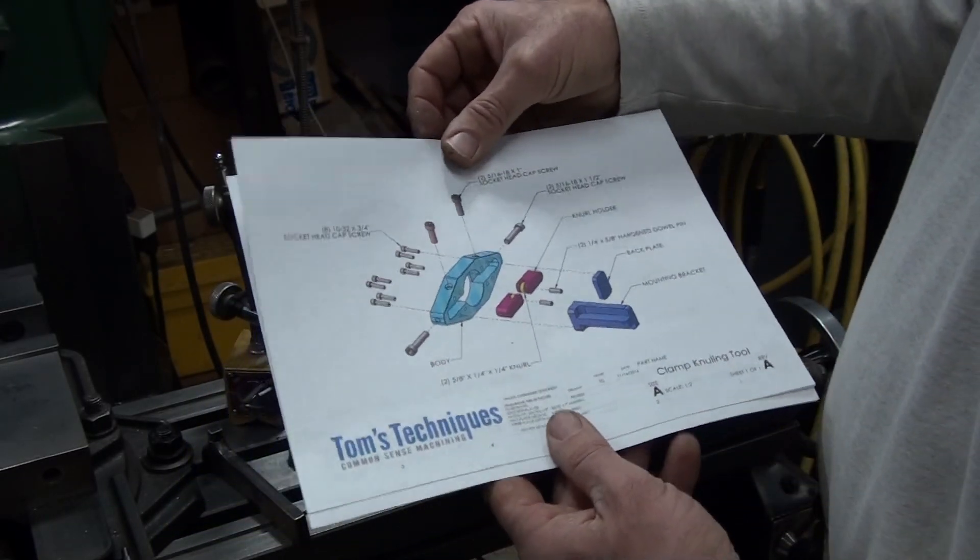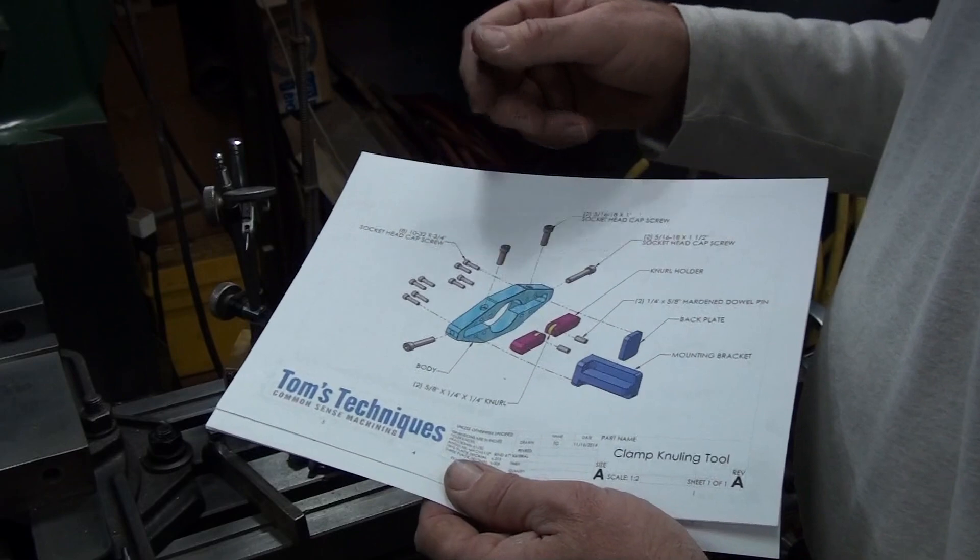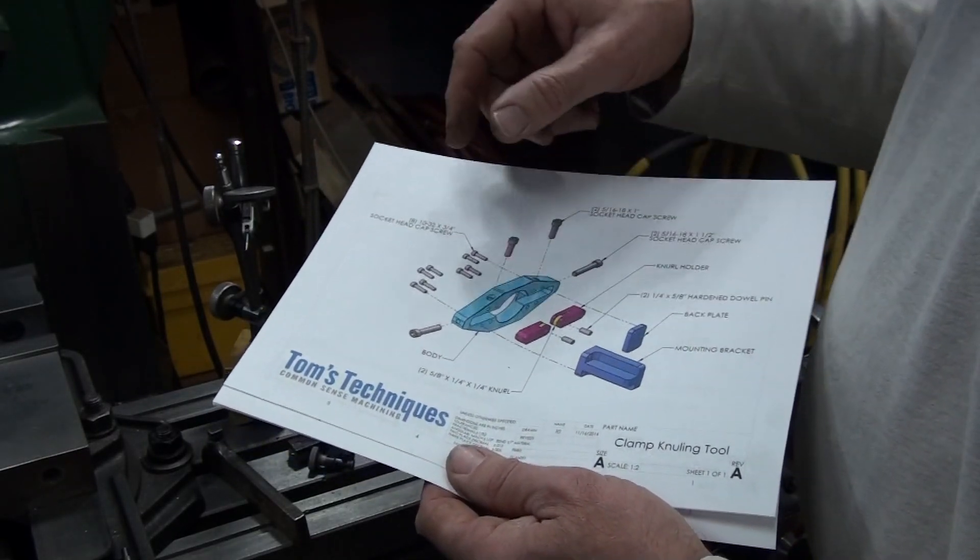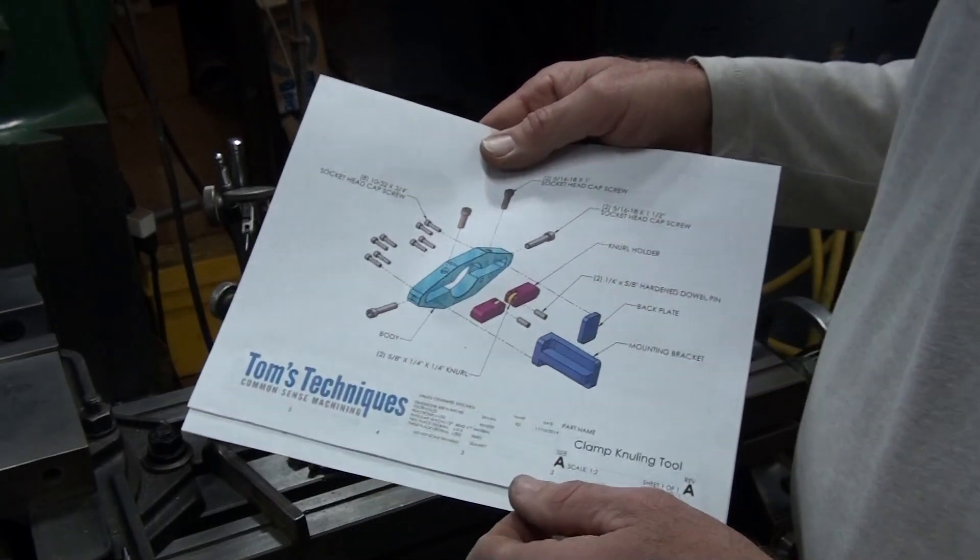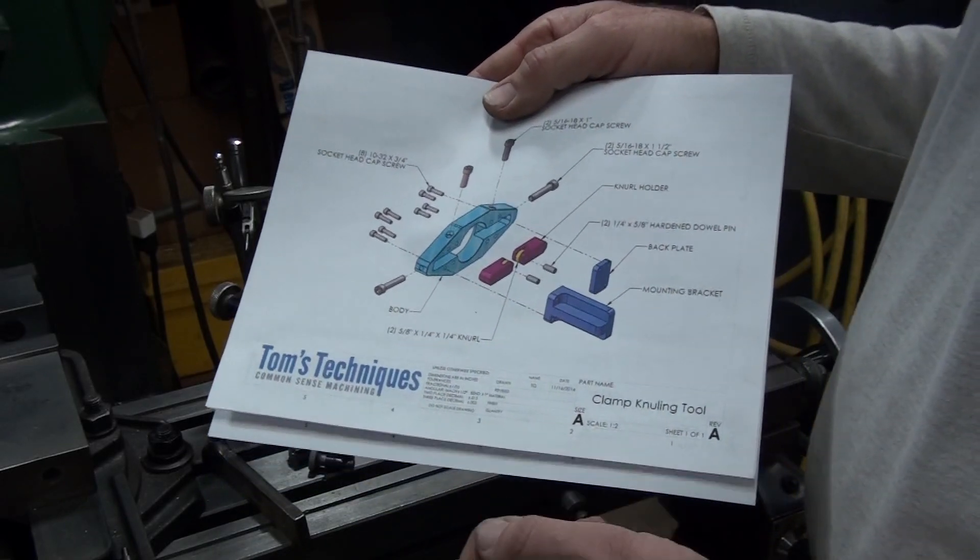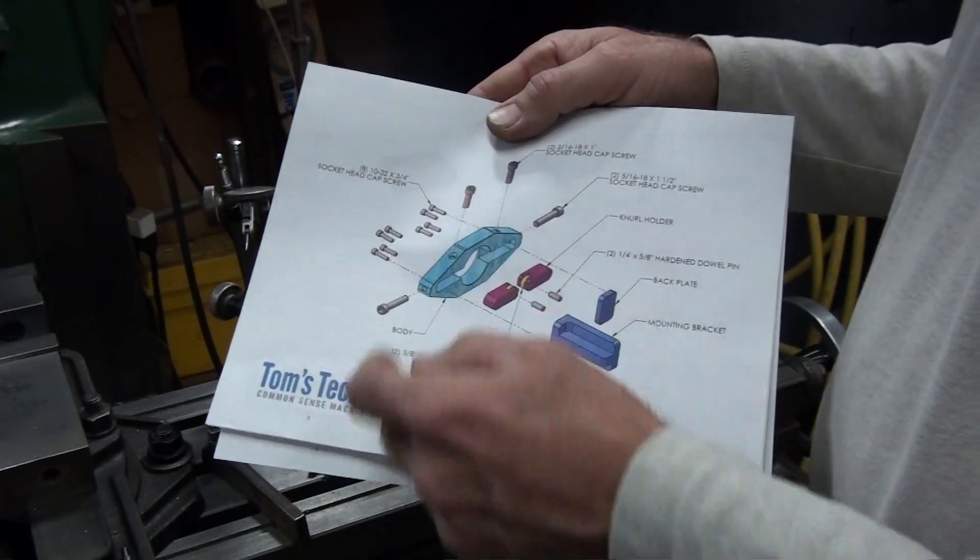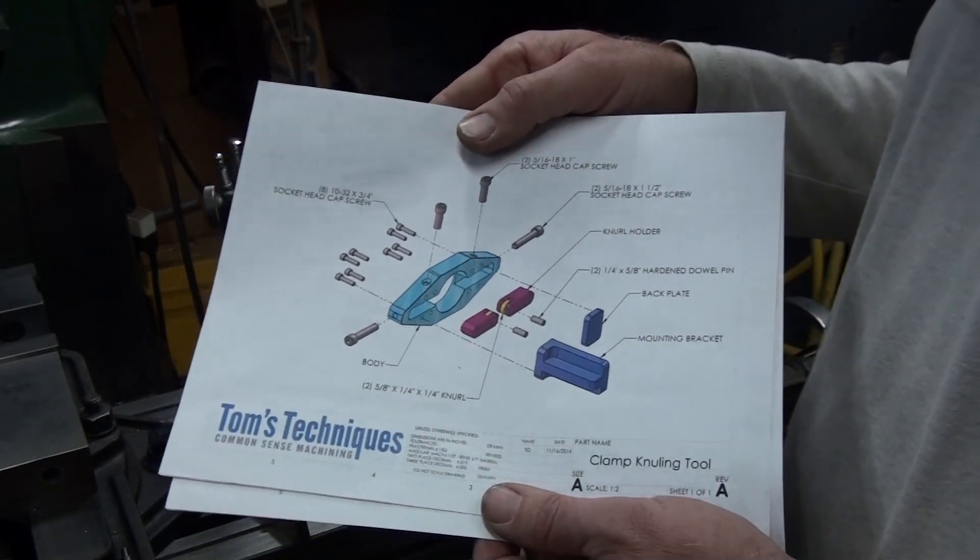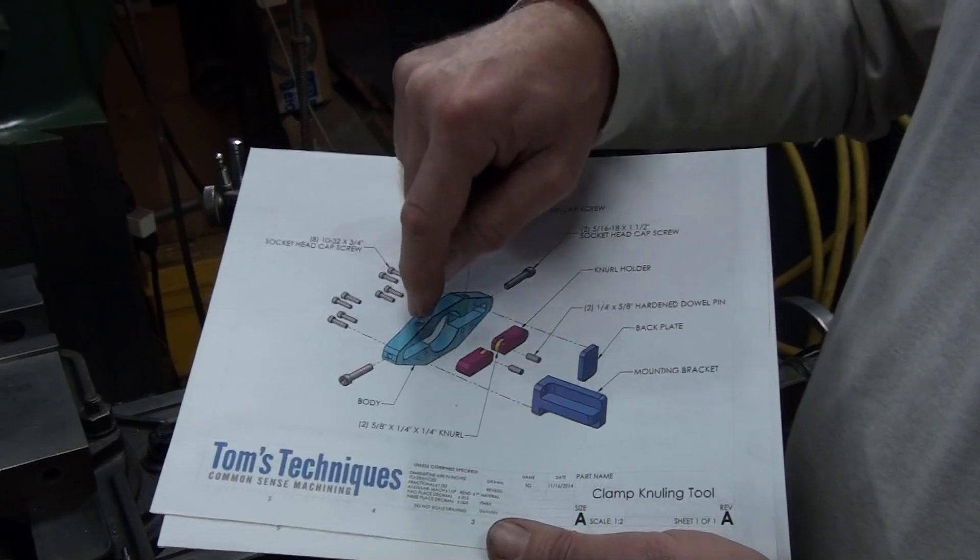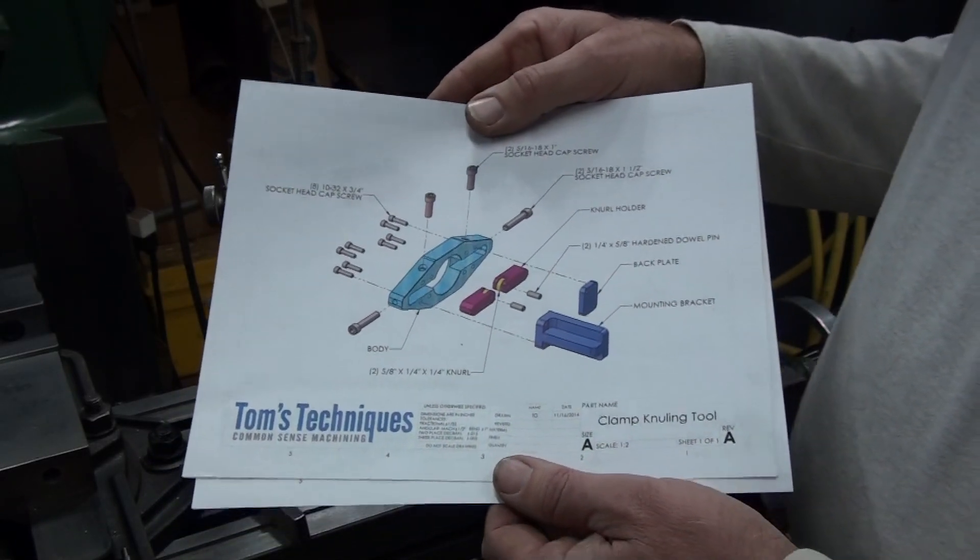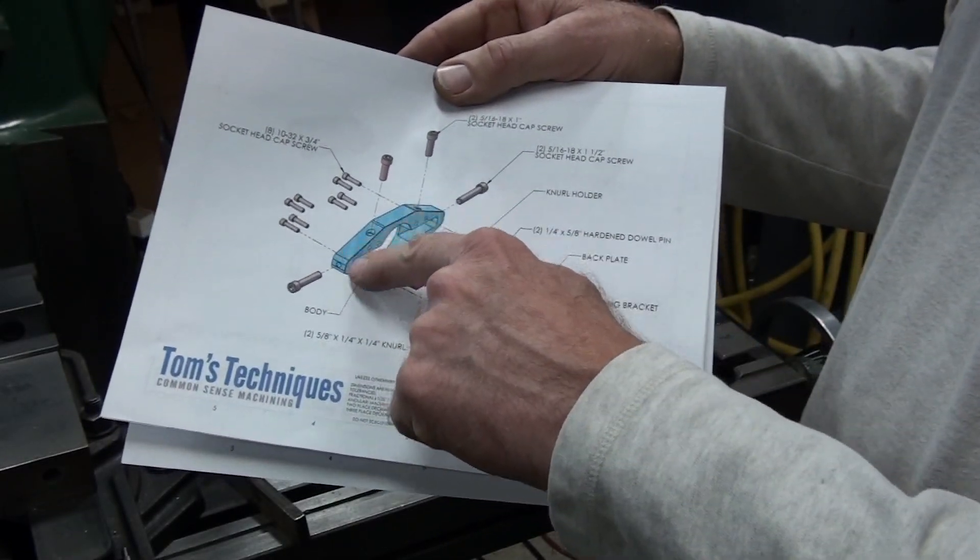The parts are basically the body, which holds everything together—it holds all the screws for clamping and attaches to the bracket for mounting on the lathe. That's the most complicated part, but the rest of them are pretty simple. We need two steel holders for the knurls. All they are is just a five-eighths square piece of steel with a slot cut in it and a hole for a pin. It just holds the wheel. Then these in turn get mounted in the body.